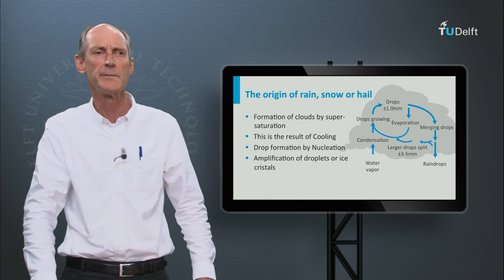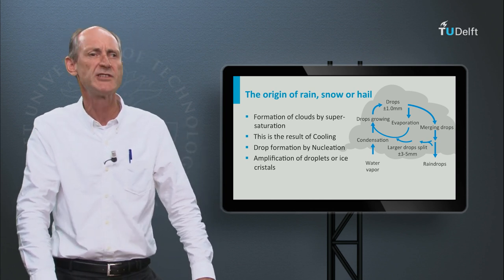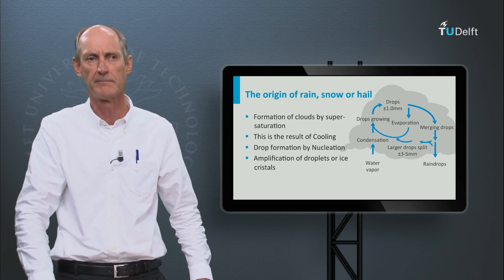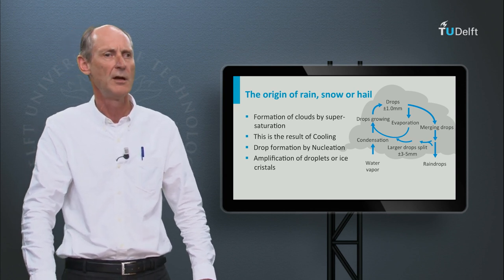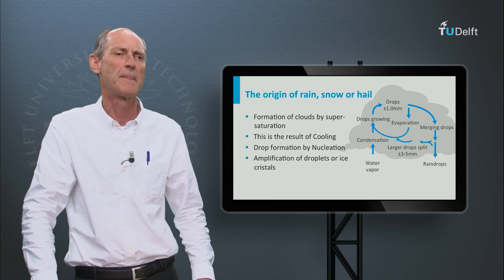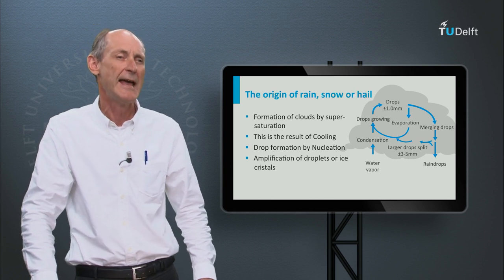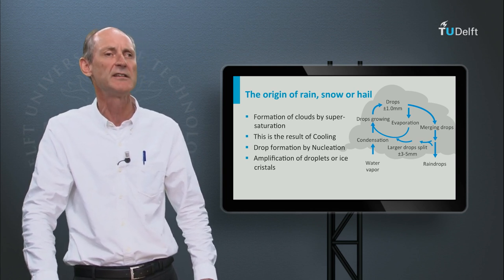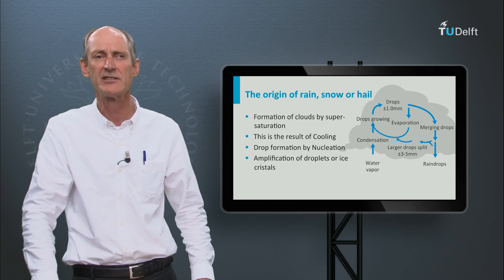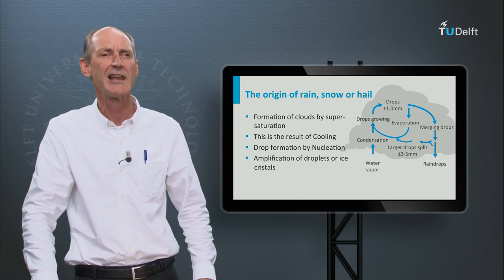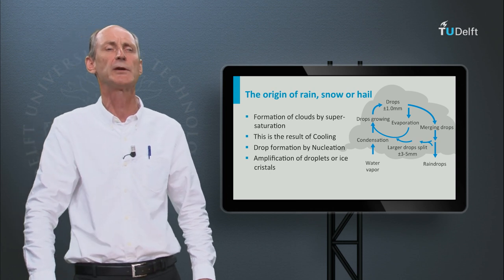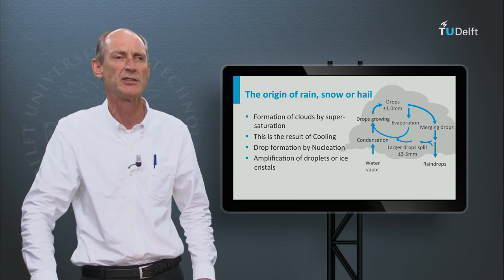Clouds are formed by supersaturation, which happens when moisture is cooled below the dew point. Cooling is caused by the lifting of air. As a volume of air is lifted, the pressure drops, and hence the temperature. The average lapse rate is 6.4 degrees Celsius per kilometer elevation.